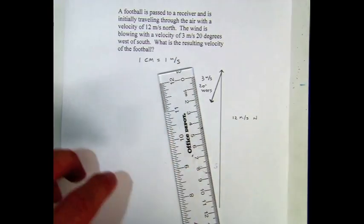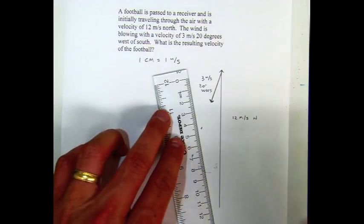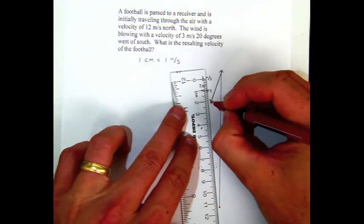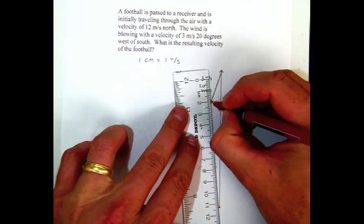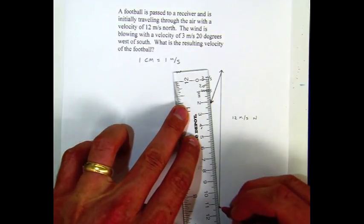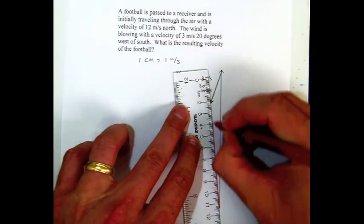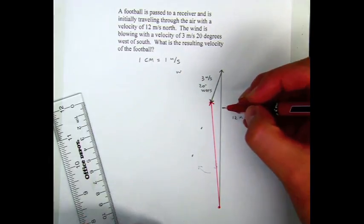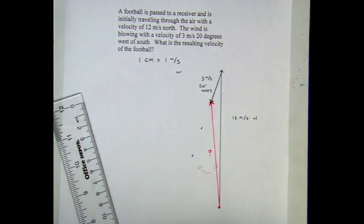So we want to add them together. From the beginning to the end of our vectors will be what's called the resulting vector. So that line, this arrow right there, if we can measure it and get the angle, will be the resultant of those two. Since it's not at a right angle and we want to draw it, we have to draw it to scale and measure it.